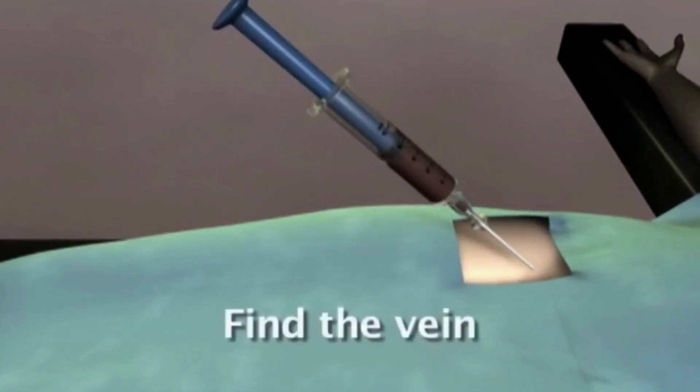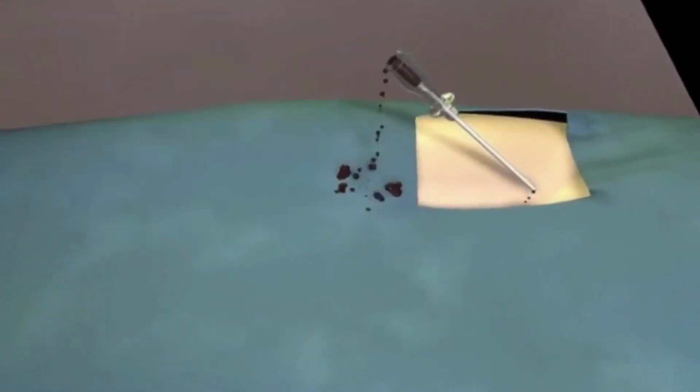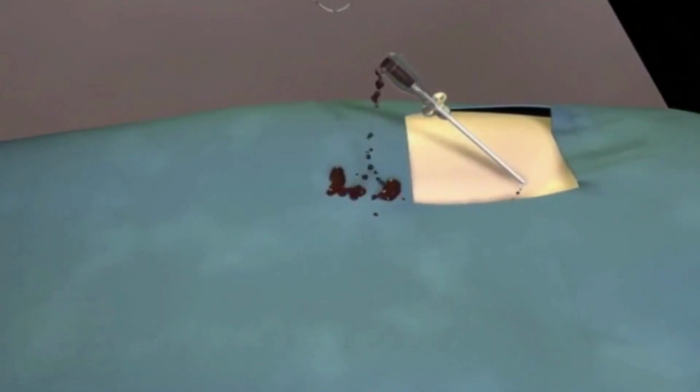First, find the vein with the introducer needle. You will know when you are in the vein when non-pulsatile venous blood is identified.